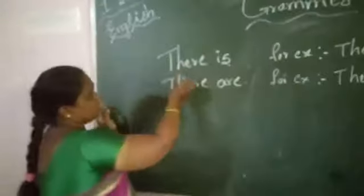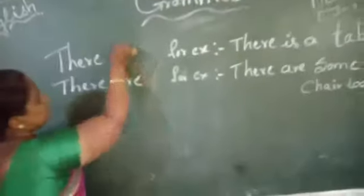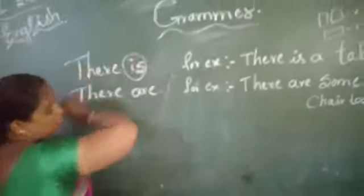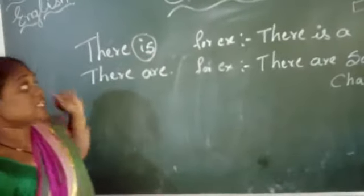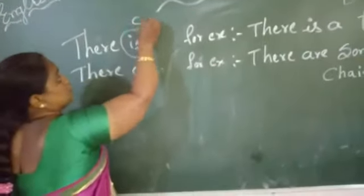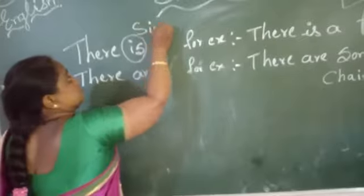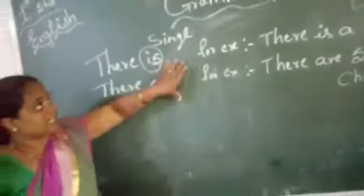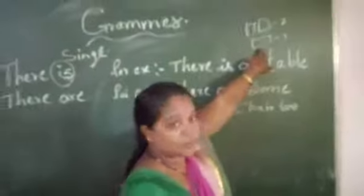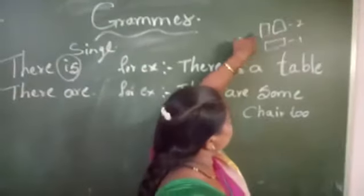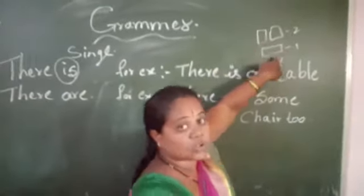I will explain. See here — 'there is' is used for a single word. For example: 'There is a table.' Here is the table — one table, singular. And 'there are' is used for a dining table and chairs — plural things. That is the rule.